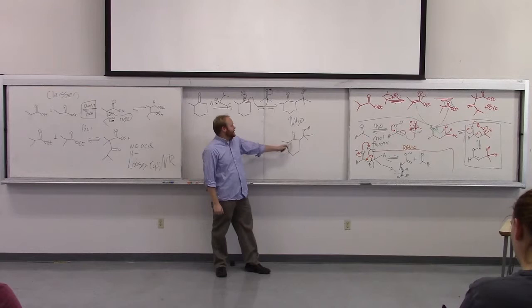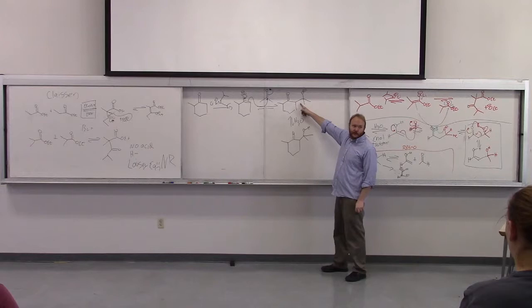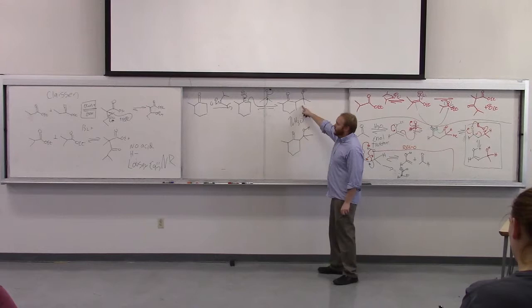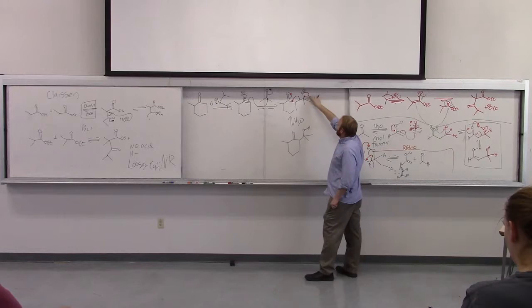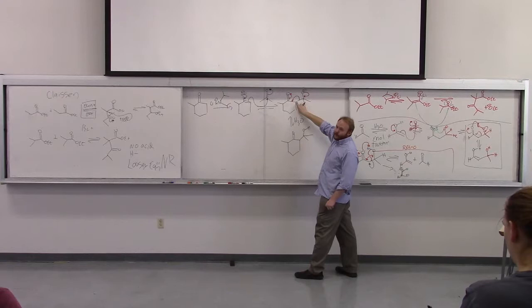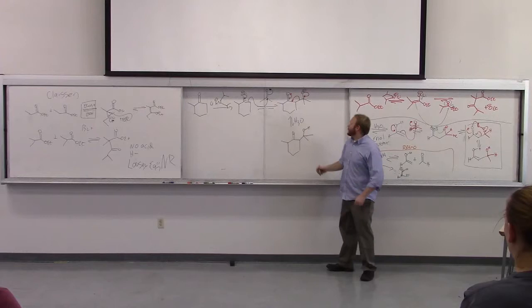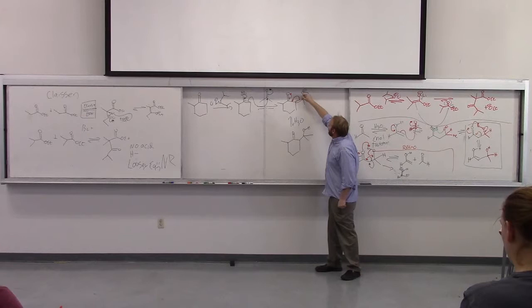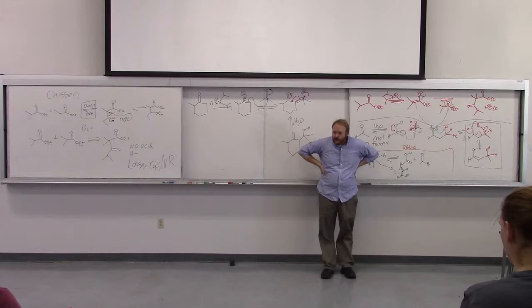The retro-aldol under basic conditions is much more stepwise. You form this alkoxide intermediate. The basic retro-aldol involves these electrons kicking down, with electron density at the carbon adjacent to a carbonyl going into the pi system—kicking the bond up to give us our enolate and our ketone again. It's electron density from the alkoxide kicking in, breaking that C–C bond, and electron density going into the pi system of the enolate.